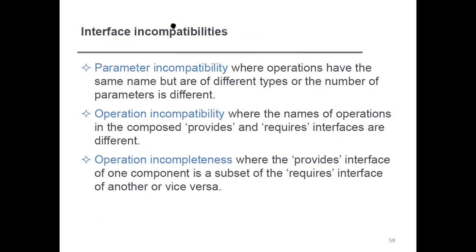Now I will discuss interface incompatibilities. There are some issues regarding incompatibilities — it is not necessary that interfaces are always compatible. The first is parameter incompatibility, where operations have the same name but are of different types, or the number of parameters is different. The name is the same, but the parameter types are different, causing parameter incompatibility.